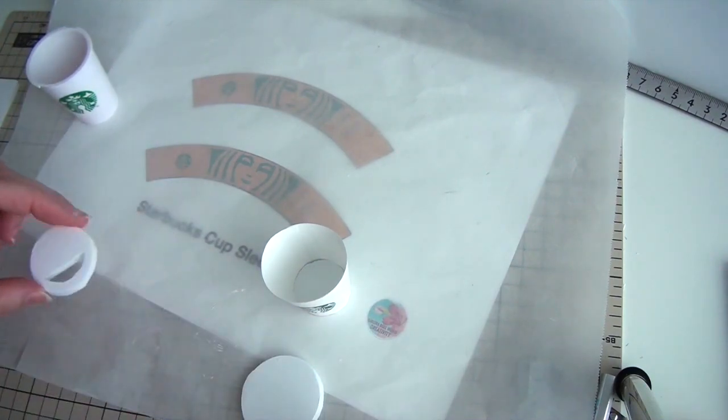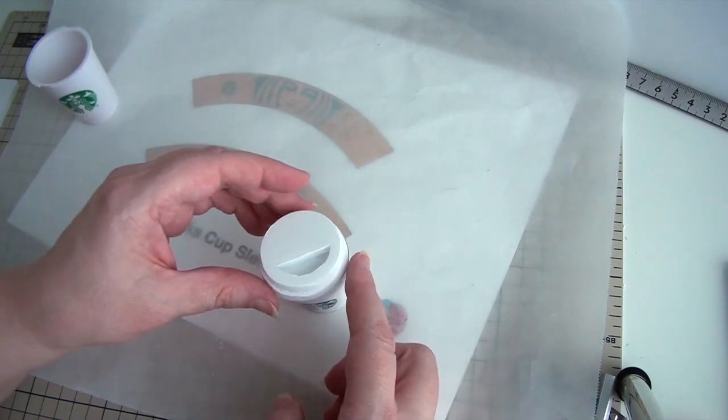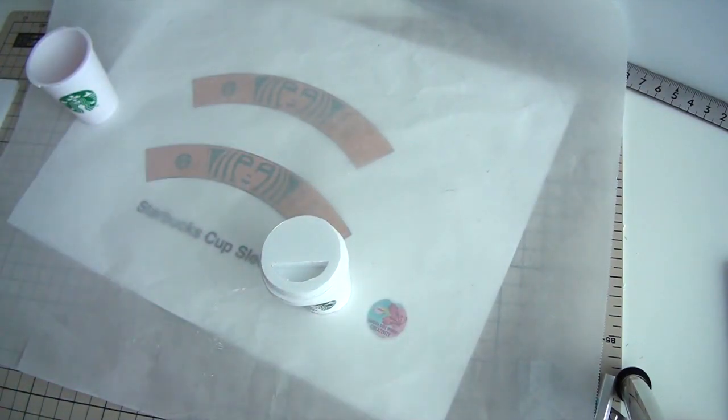If your foam board is 5 mm, cut a 7-8 mm stripe. Glue it around the circle. Glue the middle circle with the opening on top.